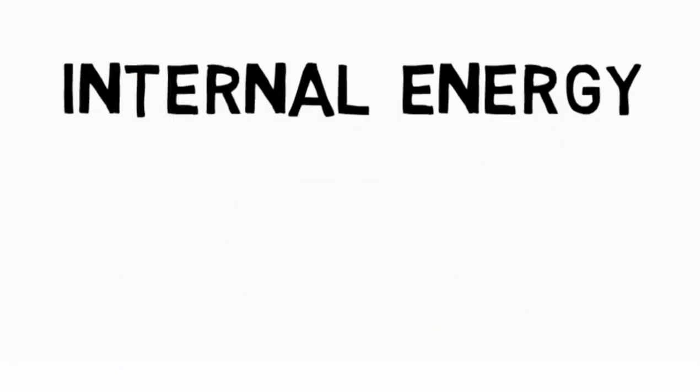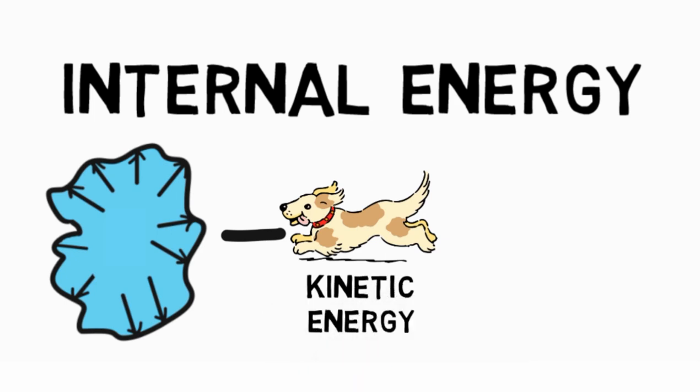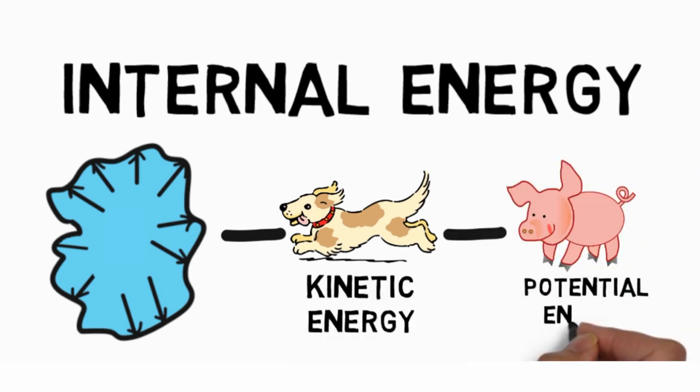The internal energy of a system is the energy contained within the system excluding the kinetic energy of motion of the system as a whole and the potential energy of the system as a whole due to external force fields. It is denoted by the letter U.